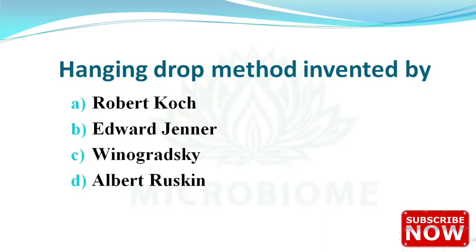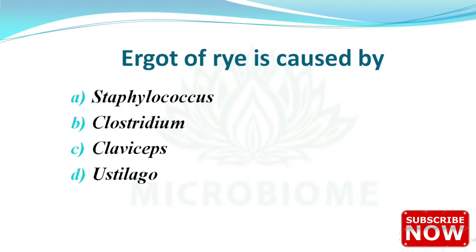Next: the hanging drop method was invented by whom? The options are Robert Koch, Edward Jenner, Winogradsky, and Albert Ruskin. The correct answer is option A — Robert Koch. Next: ergotism is caused by which organism? The options are Staphylococcus, Clostridium, Claviceps, and Ustilago. The right answer is option C — Claviceps.